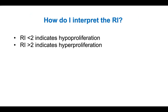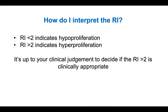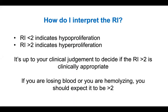How do you interpret the RI? Once you've calculated it, if it's less than two it indicates hypoproliferation. If it is greater than two, that indicates hyperproliferation. It is up to your clinical judgment to decide if greater than two is clinically appropriate. If you're losing blood or hemolyzing, you should actually expect the RI to be greater than two. If it is not greater than two, you may actually have an additional issue where you lack red blood cell production.